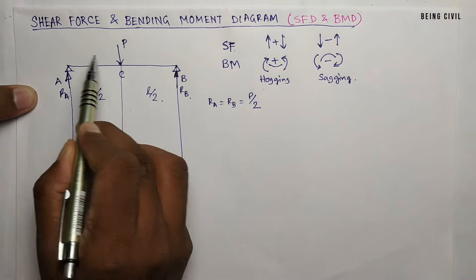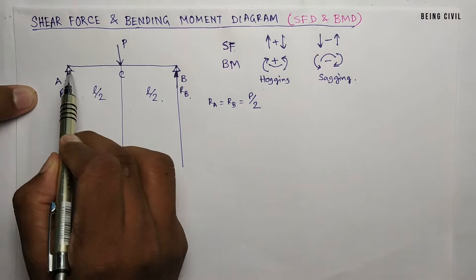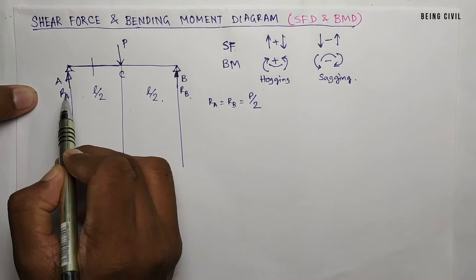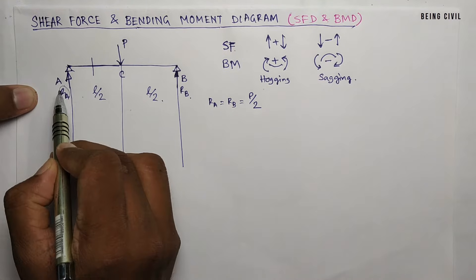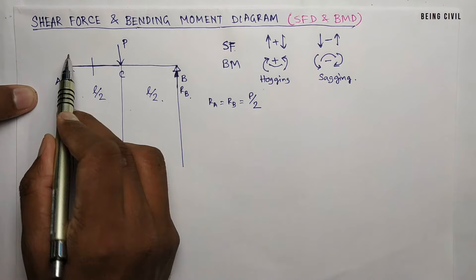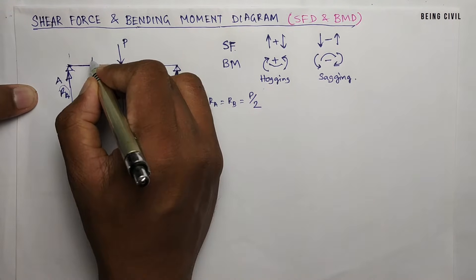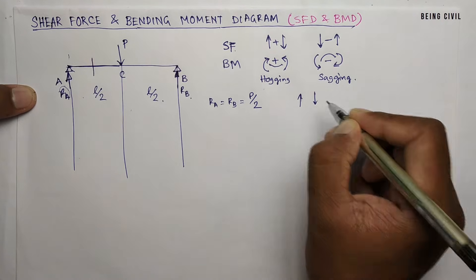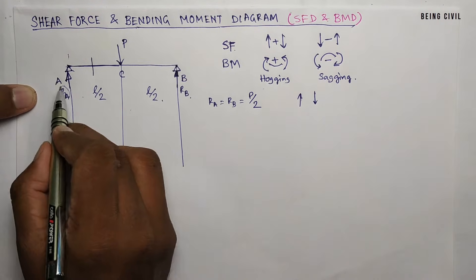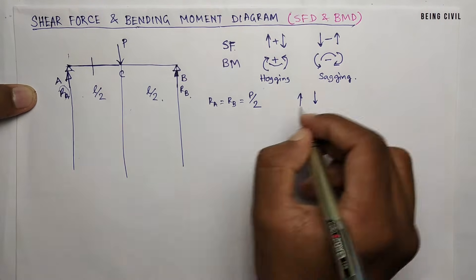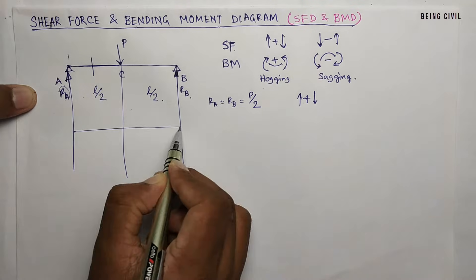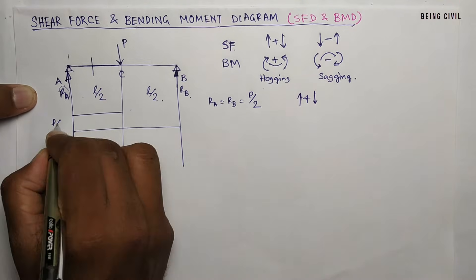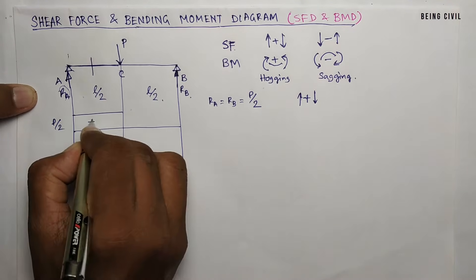Now, for the AC portion to the left side of the force, if you cut a section here the force on the left side is P by 2 upward, so at this section the force is downward. The sign is positive and the force RA is P by 2. So for the section AC the shear force will be P by 2 positive.